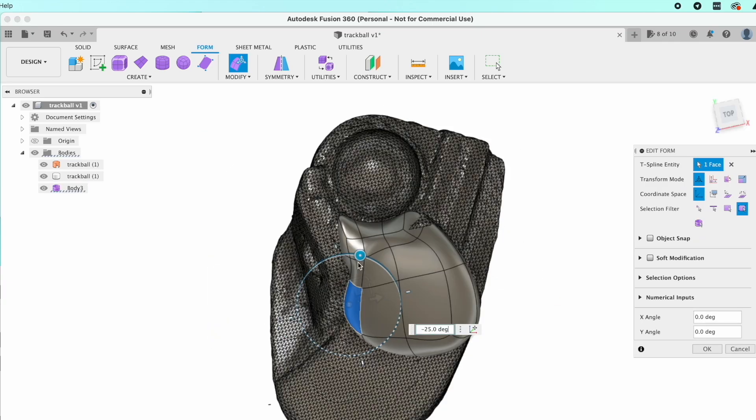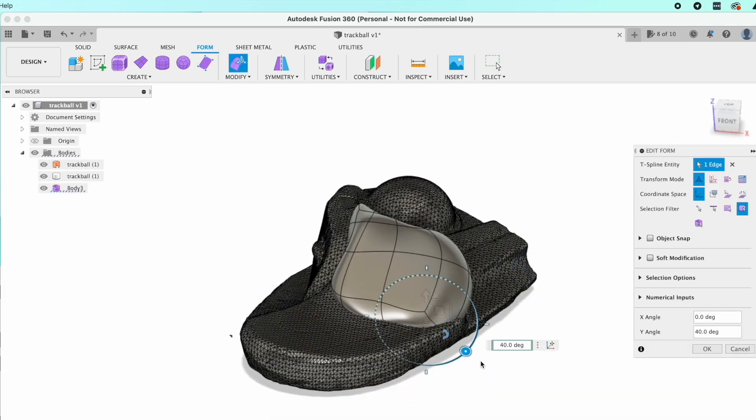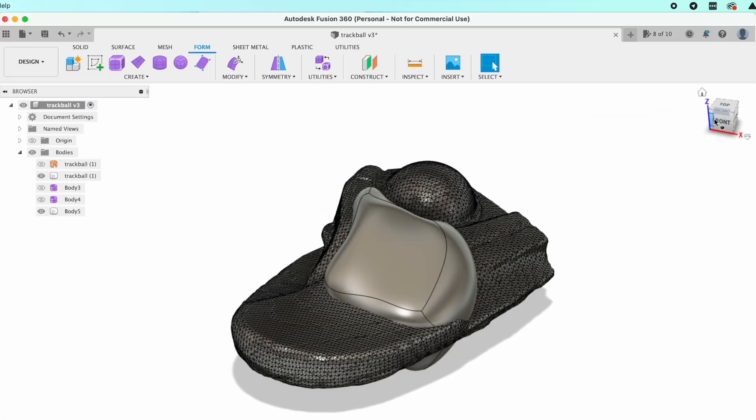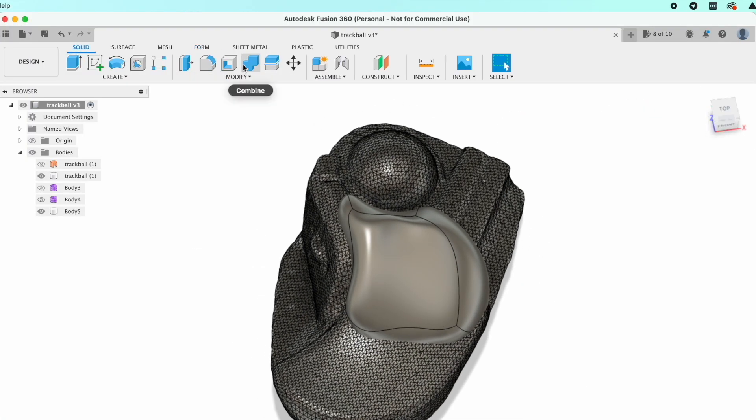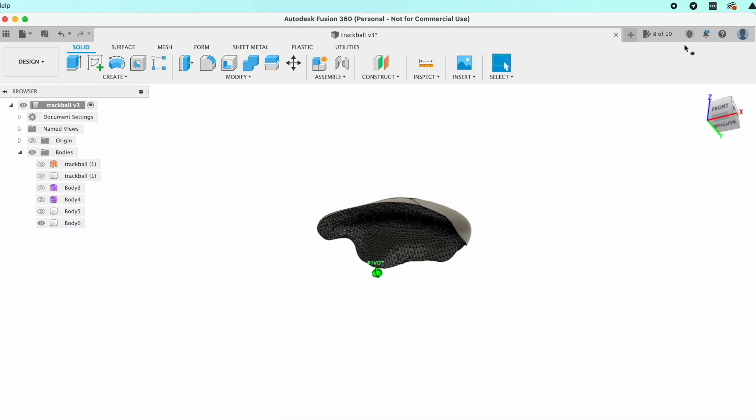It doesn't need to be perfect right now because I'm going to do a lot of the design in real life, it just needs to be a rough starting point. I convert this into a solid and then use combined to subtract out the profile of the scanned mouse from this shape for what should be a perfect fit.